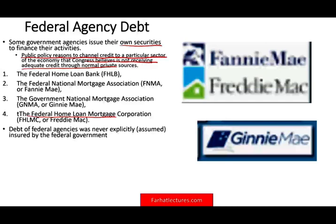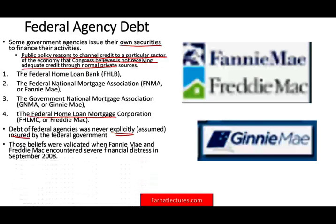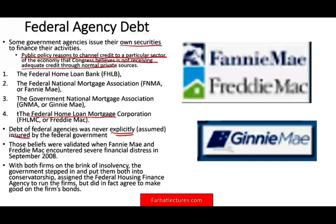The debt of federal agencies was never explicitly insured, but it was assumed the government would cover their debt. Those beliefs were validated when Fannie Mae and Freddie Mac encountered severe financial distress. With both firms on the brink of insolvency, the government stepped in and put them into conservatorship, assigning the Federal Housing Finance Agency to run the firms. The government did in fact agree to make good on their bonds.